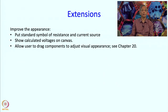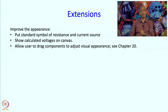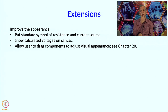If the user places a node but then later does not like the position — maybe it becomes too cluttered — the user should be allowed to drag the components to adjust the visual appearance. This can be done and the primitives you need for it are discussed in chapter 20 of the book.